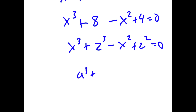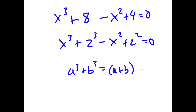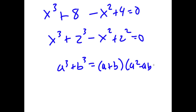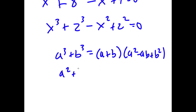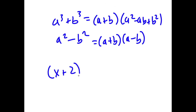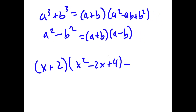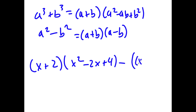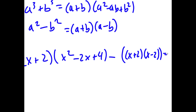Using the sum of cubes formula: a cubed plus b cubed equals (a + b)(a squared minus ab plus b squared), and the difference of squares formula: a squared minus b squared equals (a + b)(a − b), I get (x + 2)(x squared minus 2x + 4) minus (x + 2)(x − 2) is equal to 0.